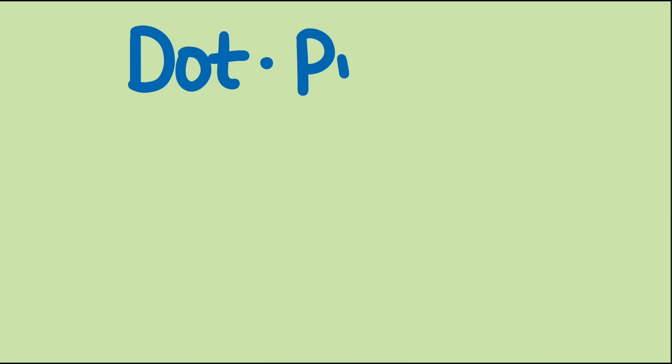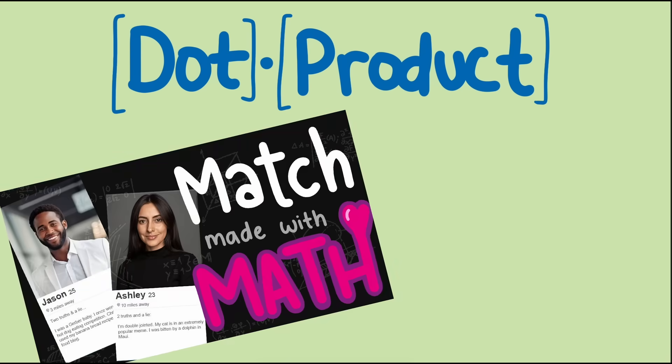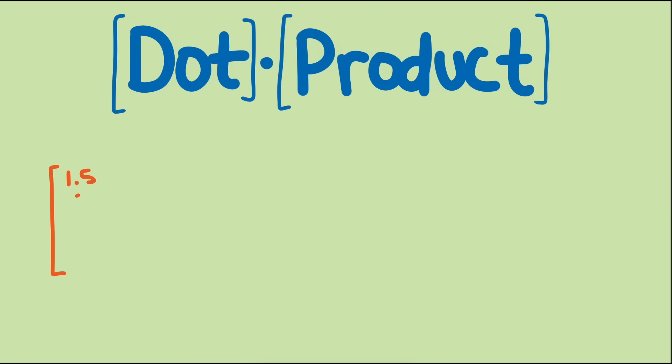But first let's take a closer look at dot products. After all, in our earlier video on dot products we never discussed why that operation should be considered a product at all. And understanding that will help us understand why matrix multiplication should also be considered a product. As a quick reminder, the dot product of two vectors is the sum of the product of each corresponding entry.